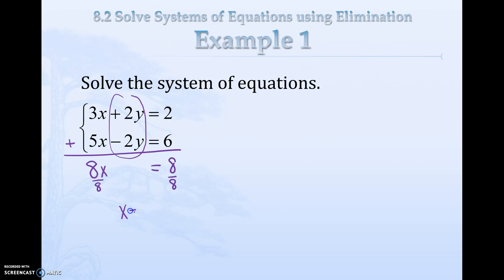So the first part of our solution is 1. Now we need to plug x equals 1 into one of our original equations, and we can pick which one we want. I would definitely pick positives if at all possible, so I'm going to pick this one. 3 times 1 is 3, plus 2y equals 2.